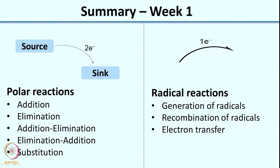For polar reactions, you use a double-headed arrow to show movement of electrons; this double-headed arrow indicates movement of 2 electrons. Typically the arrow originates from the electron source and goes to the electron sink. Terms analogous to source include donor and nucleophile, and instead of sink you have terms like electrophile and acceptor.